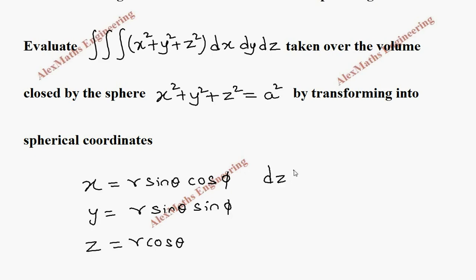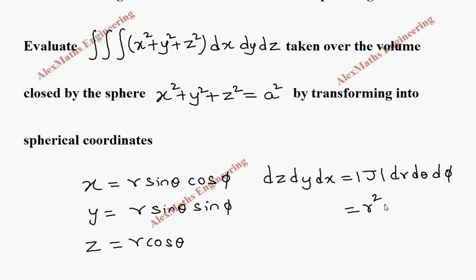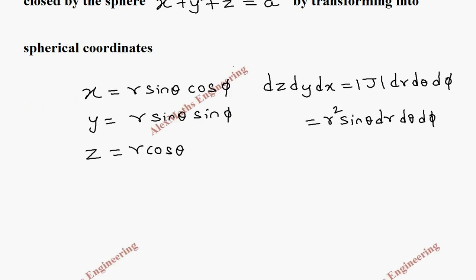Using the formula, the value of dz dy dx equals the Jacobian determinant times dr dθ dφ. After evaluating, the Jacobian determinant is r² sinθ. Along with that, the remaining terms dr dθ dφ will come.